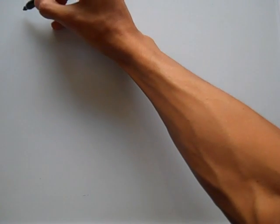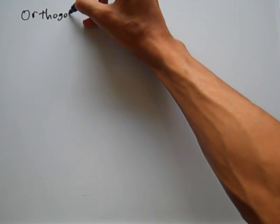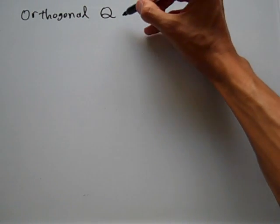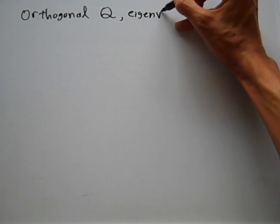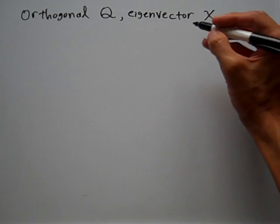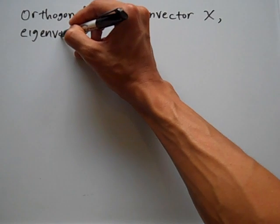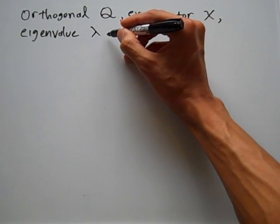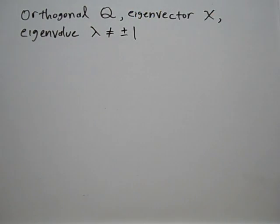Suppose I've got an orthogonal matrix Q with eigenvector X and a concomitant eigenvalue lambda, with the stipulation that lambda not be equal to positive or negative 1.